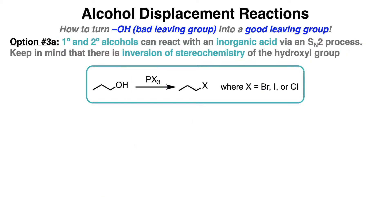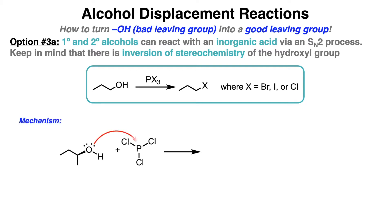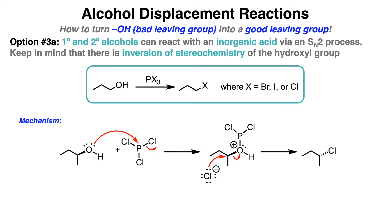Another way to convert primary and secondary alcohols into an alkyl halide is to use an inorganic acid via an SN2 process. One way is to use PX3, where X could be any halogen like bromine, iodine, or chlorine. The mechanism starts with one of the lone pairs of O attacking the phosphorus atom of PCl3. Then one of the chlorides breaks off to form the intermediate. Then the Cl⁻ that broke off comes back and attacks the alpha carbon, and the entire leaving group leaves. Since this is an SN2 process, and the current leaving group was on a wedged bond, Cl⁻ will attach as a dashed bond due to inversion of stereochemistry.